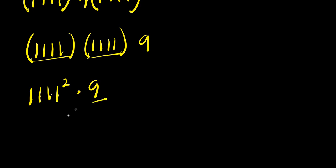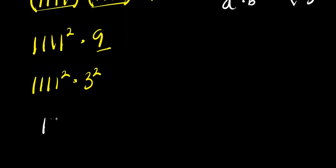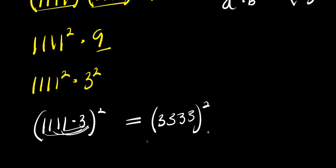Now this and this are the same, it's like having 1111 squared times 9. And I can express this 9 as 3 squared, so I have 1111 squared times 3 squared. Now if you have a to the power c times b to the power c, this equals ab to the power c. So you have 1111 times 3, raised to the power 2, and 1 times 3 is 3, giving 3333 squared.